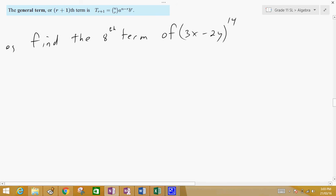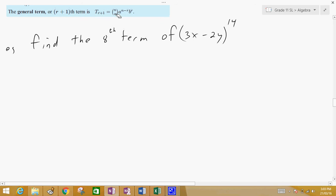Well, we've been given this formula in your formula booklet, and in the formula booklet this is the middle term that they give you in the formula. And it says that the general term, or the r plus first term, is equal to n choose r times a to the power of n minus r, b to the power of r.